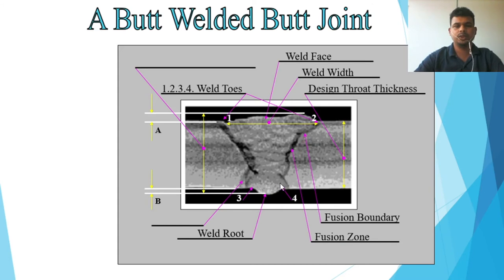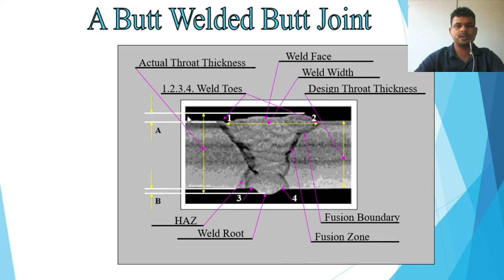The fusion zone is the area that has been fused, bounded by the fusion line. Beyond that is the heat affected zone (HAZ), showing how far the heat has affected the material. The actual throat thickness equals the base metal thickness plus excess weld metal. The face-side reinforcement (a) plus the root-side reinforcement (b) equals the total excess weld metal.